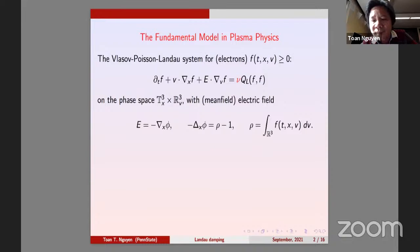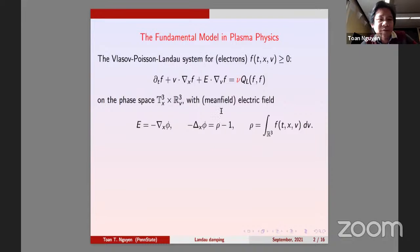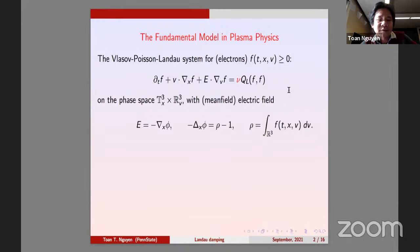This is the model that describes the dynamics of electrons, where f is a density distribution function — a function of t, x, and v. x and v live on the phase space, with x on the torus and v on the whole space. The equation for f is the Vlasov equation on the left, and on the right we take into account collisions.